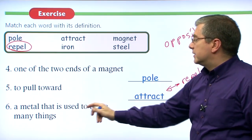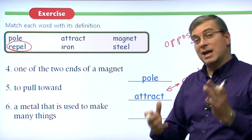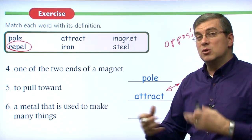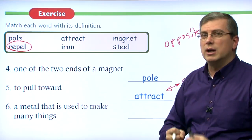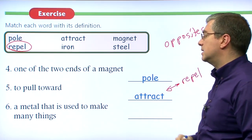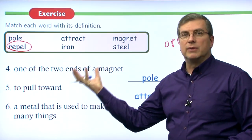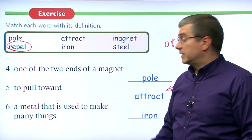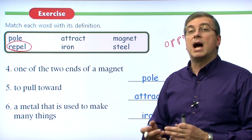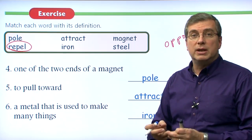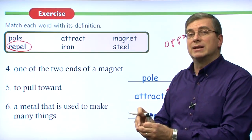Number six: a metal used to make many things. This is the metal that human beings found a long time ago — it's heavy but strong and very useful for making many different things. Iron is also used to make steel, and both iron and steel have the same properties in that magnets are attracted to these metals.